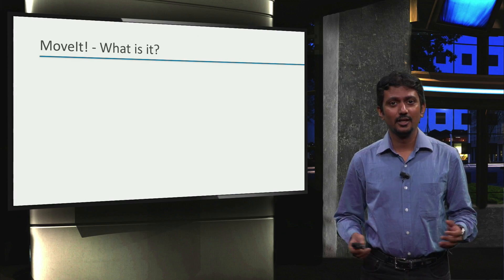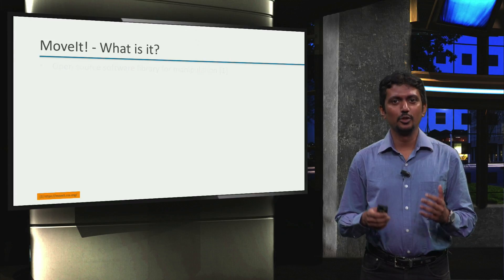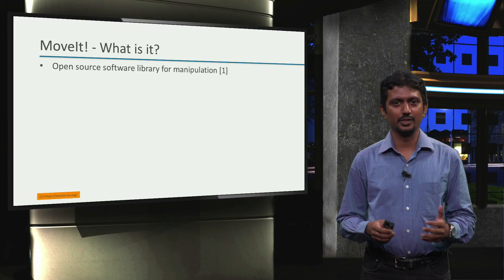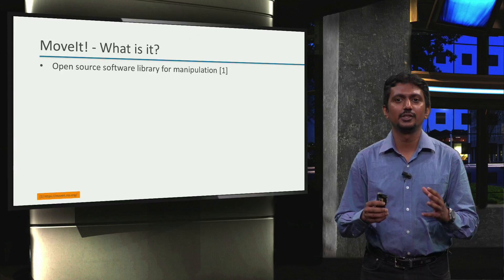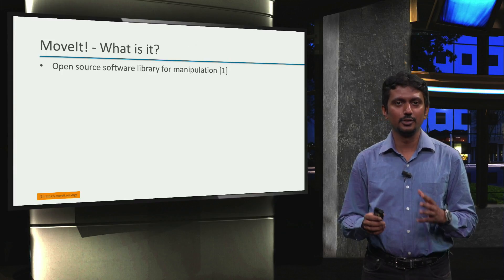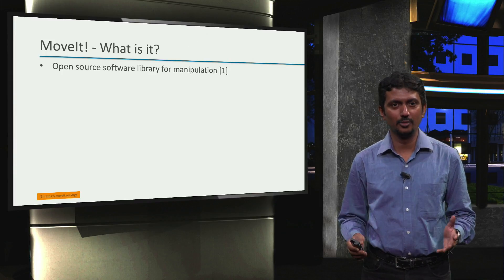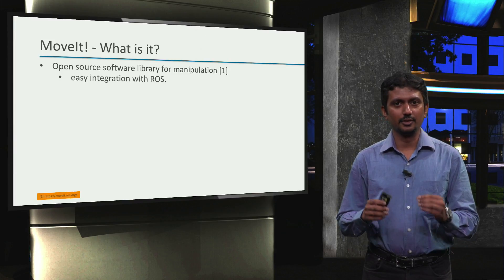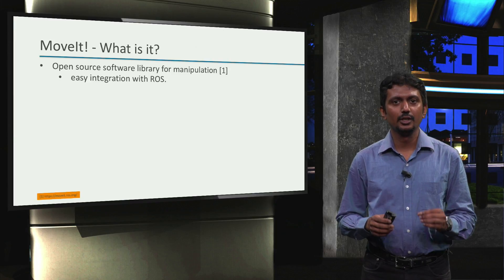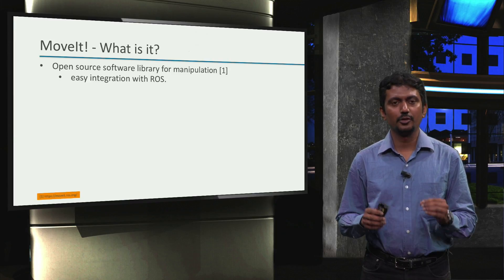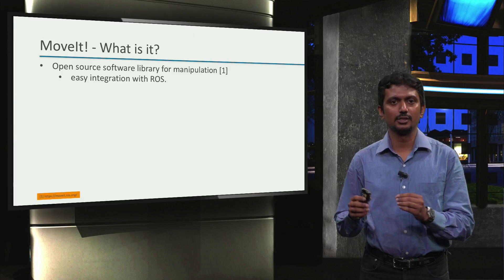So what is MoveIt? MoveIt is an open-source software library for manipulation using robot arms that are either fixed rigidly to a certain location or mounted on top of a mobile robot. MoveIt is integrated with ROS.